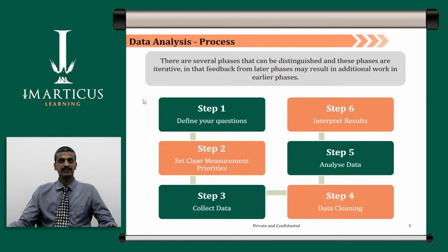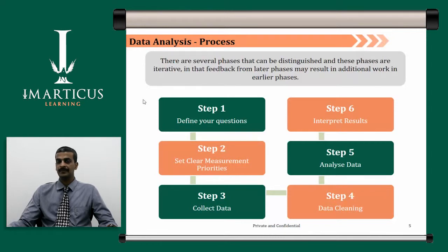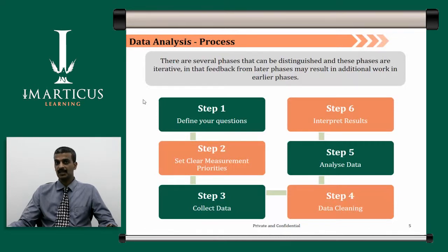There are various components of data analysis. There are several processes that can be distinguished, and these phases are iterative — feedback from later phases may result in additional work in the earlier phases. This is a cyclic process which starts and ends with particular steps; if prior processes are not up to the mark, you need to go back, perform cleansing, correct those steps, and get the data to the desired level before continuing. The steps involved are: Step 1, define your questions; Step 2, set clear measurement priorities; Step 3, collect data; Step 4, interpret results; Step 5, analyze data; and then comes data cleaning.